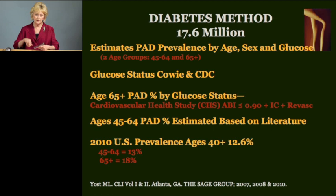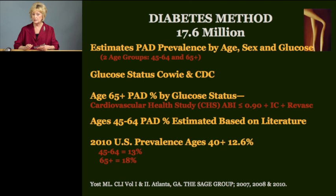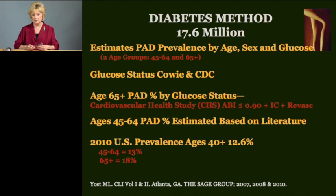Now, another way to calculate or estimate PAD numbers is the diabetes method — that's something that we developed. According to this method, there are about 17.6 million people in the U.S. today with PAD. This method is a real-time population-based method which estimates PAD for two age groups — 45 to 64 and 65 and older — and estimates it by sex and glucose status. The studies used to look at the prevalence of PAD by glucose status defined PAD as ABI less than 0.9 in addition to a history of PAD. Calculating backwards, the prevalence by the diabetes method is about 13% in the population 40 and over, which compares with the 12% prevalence in the Cricky Partners method.